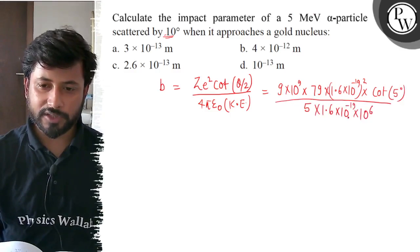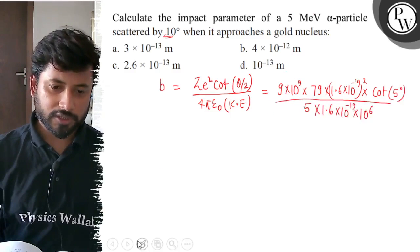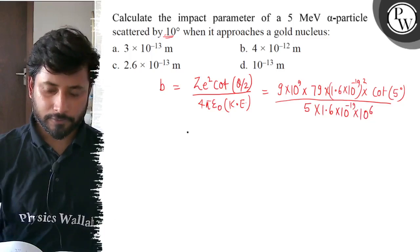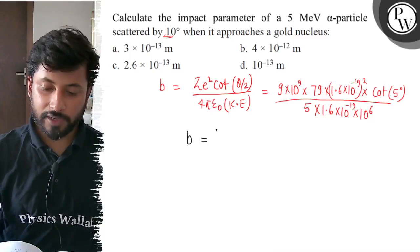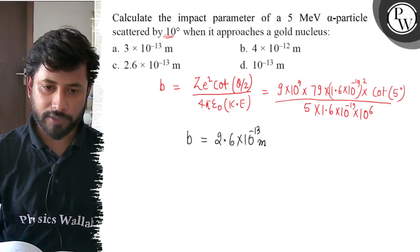Mega is 10 to the power 6. So when we solve this, we get 2.6 into 10 to the power minus 13 meter.